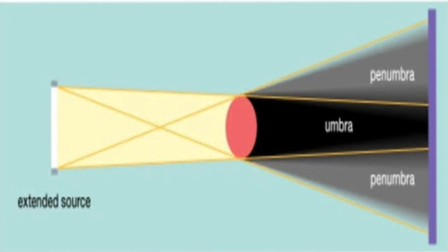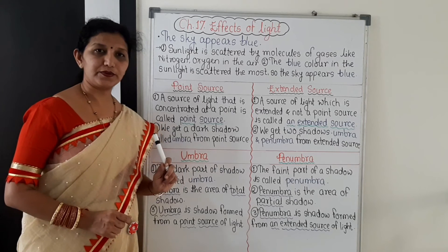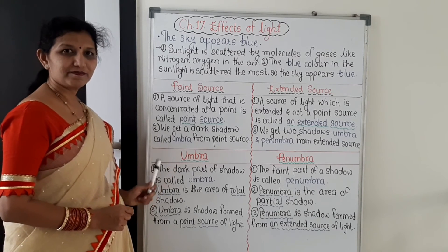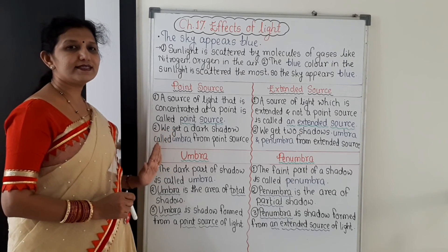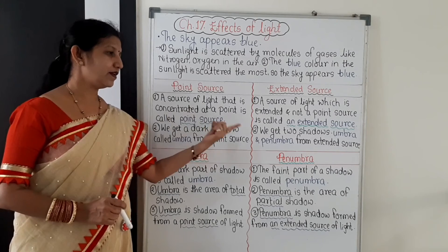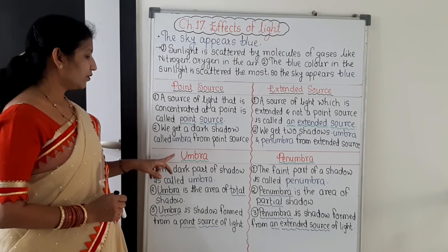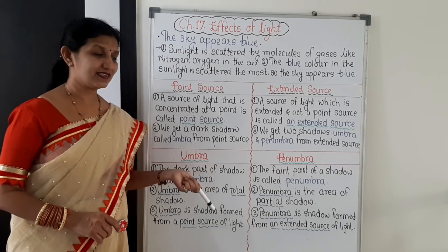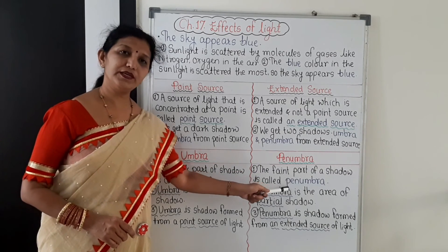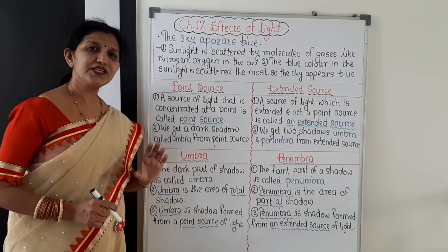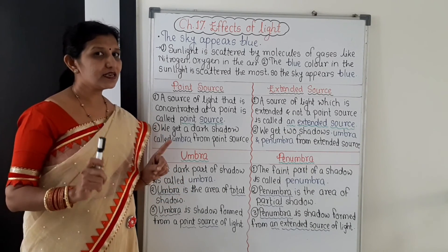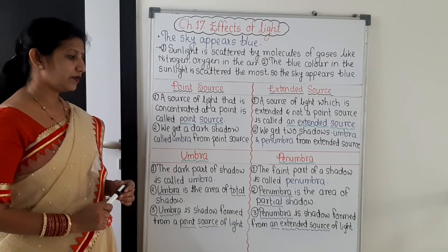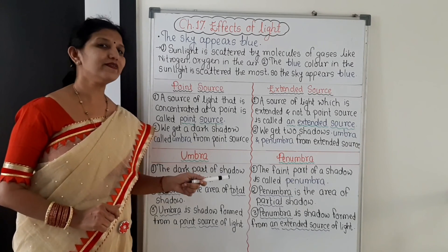What is penumbra? Penumbra is the faint part of a shadow. Only remember that umbra is the dark part, and then you will automatically remember that penumbra is faint. The faint part of a shadow is called penumbra. Penumbra is the area of partial shadow — it is not total shadow, but partial shadow, and that is why it is faint. Penumbra is a shadow formed from the extended source of light.